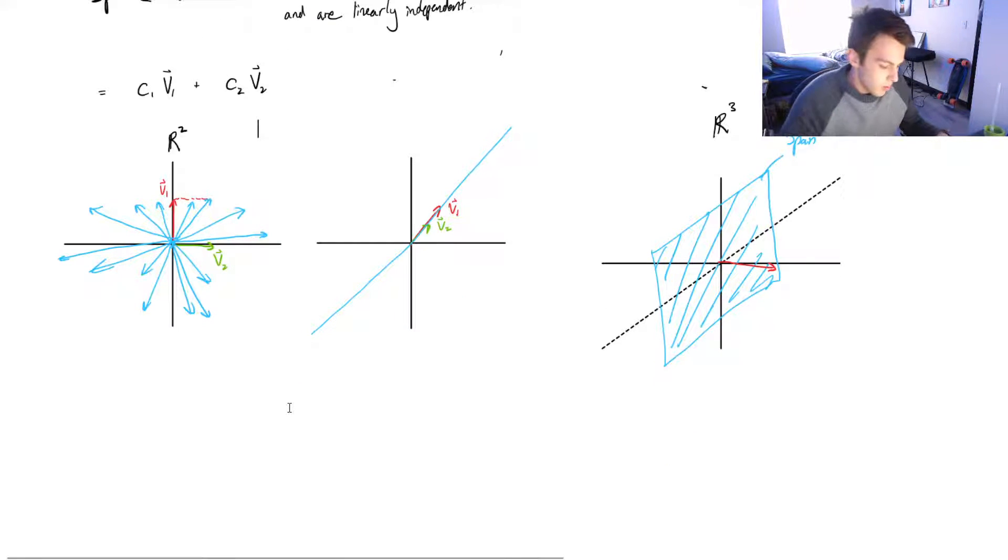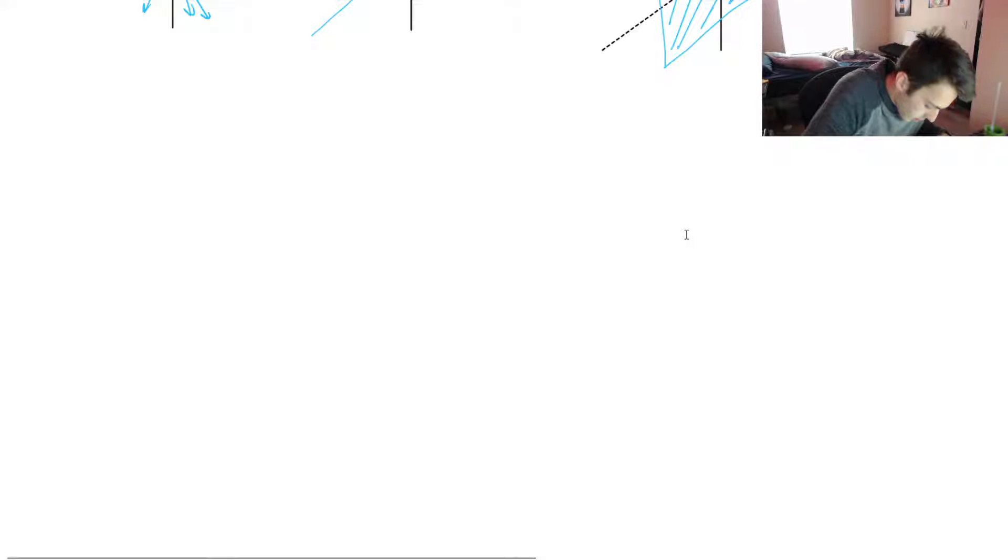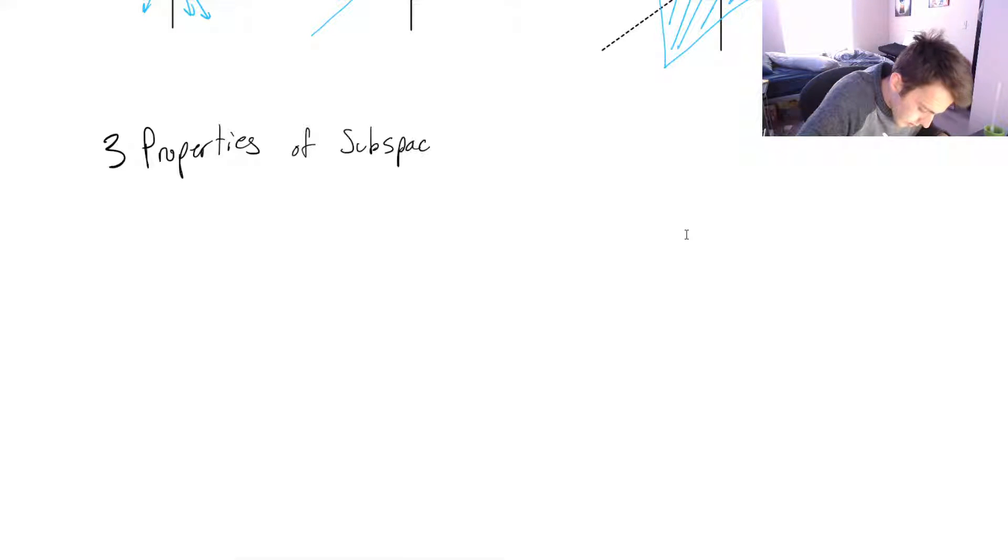So let's take a look now. What is a subspace? And so in these examples, our vector spaces was R² and we had R³. So a subspace is just a vector space, just like R² and R³, but it's within R² or within R³. And in order to determine if we can say that they are in R² or R³, they need to pass these three properties. And the three properties are the subspace. Let S be a subspace.